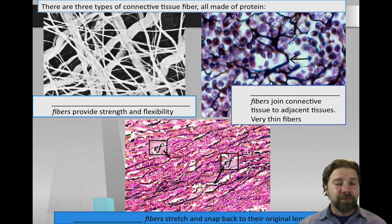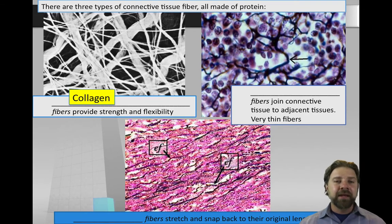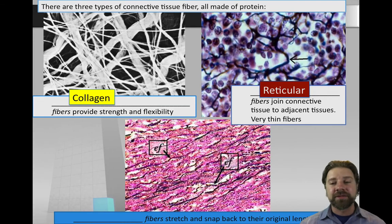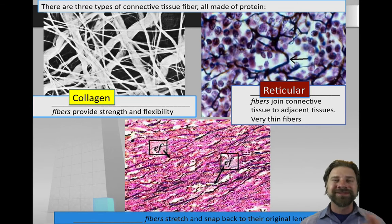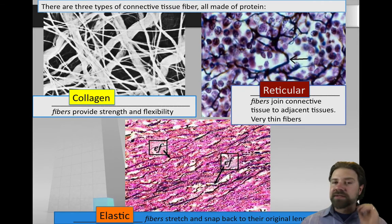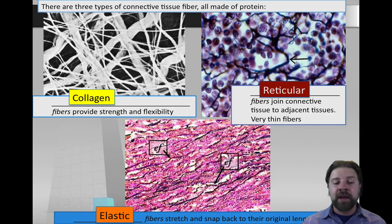There are other types of connective tissue based on protein. Collagen fibers provide strength and flexibility within the ECM. Reticular fibers join connective tissue to adjacent tissues and form very thin, lace-like structures. Elastic fibers are the stretchy proteins — for example, pulling your ear and having it snap back is due to the high number of elastic fibers in those structures.